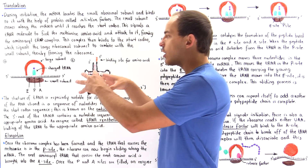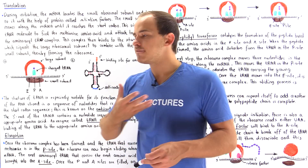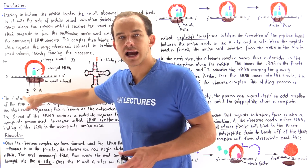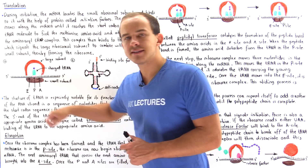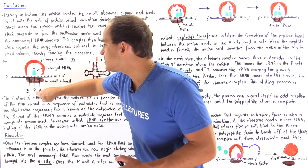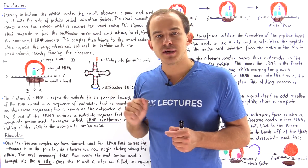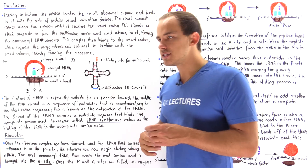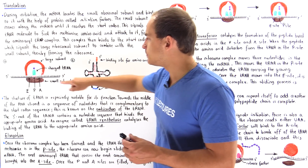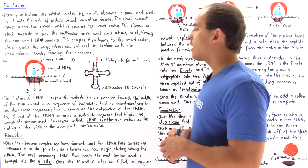Once our ribosome complex has formed, there are three locations within the ribosome that we have to be aware of. We have the P site, we have the A site, and we have the E site. We'll talk about the A site and E site in a moment when we discuss elongation. The P site is where the first charged tRNA actually binds. Following initiation, the charged tRNA molecule that carries our methionine amino acid is found within the P site of our ribosome.